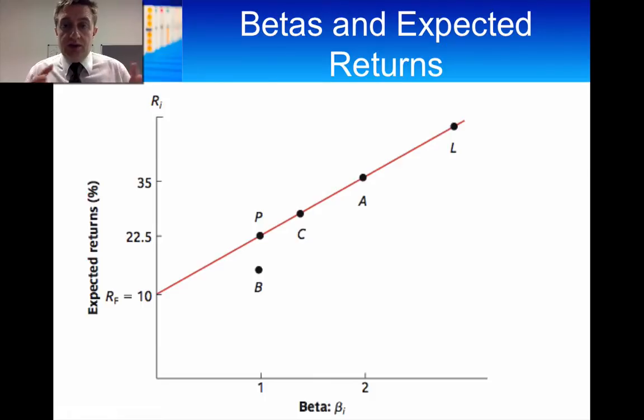This asset here, or this portfolio here, has a beta of 2. So it's quite a risky portfolio. And the return on that portfolio is 35. Now because this relationship is linear,